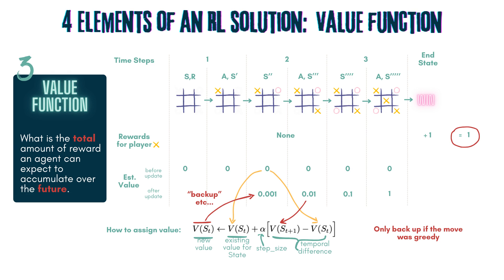Note that the value for a given state is only updated if the move was greedy — this will be explained in more detail when we look at the code. Once the backup is done, the two players may start a new game and keep learning and updating the values. During training, the players may play 1,000 games, with values continuously updating game after game. These values are not reset after each game; instead, the learning accumulates until training is complete.